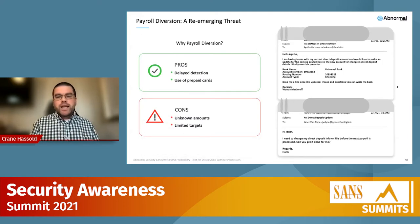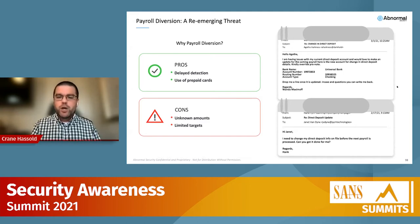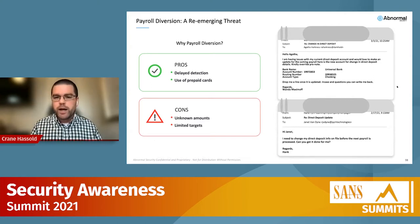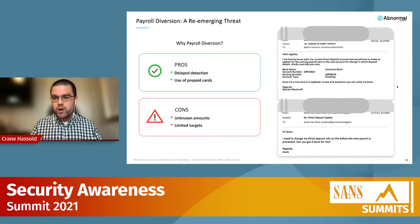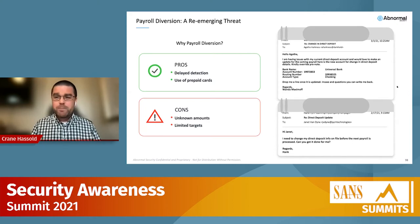Another type of BEC that's undergone significant transformation over the past year and a half is payroll diversion. A BEC actor impersonates an employee — usually a C-level executive — contacting someone on the HR team to say, 'I've just changed my bank account, I need to update my direct deposit information.' This type of attack saw a significant decline to only about 3% of monthly BEC attacks in July of last year.